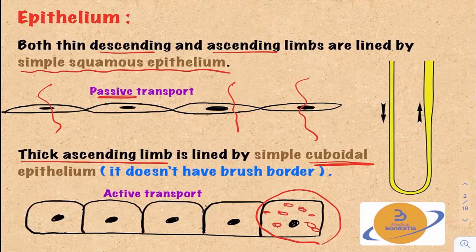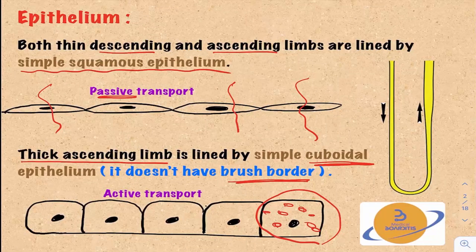It's also important to remember that these cells do not have a brush border, in comparison to the proximal convoluted tubule cells which have an extensive brush border. That explains why the percentage of transport across the proximal convoluted tubule is much higher than in the Loop of Henle.